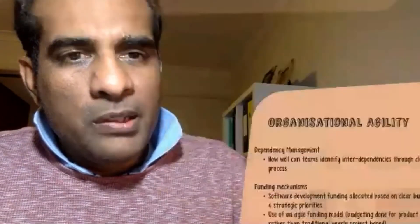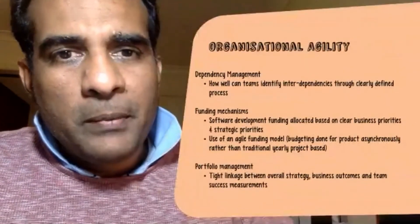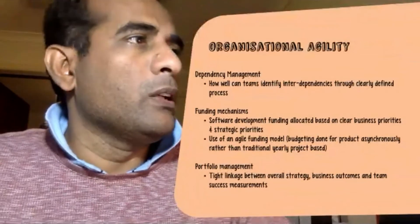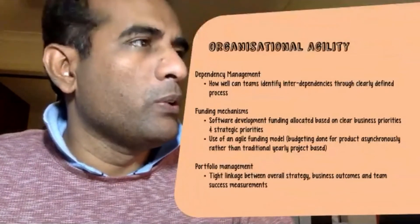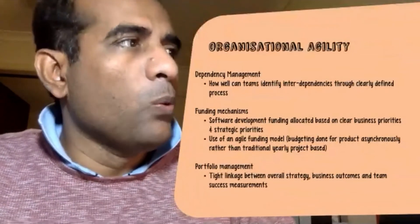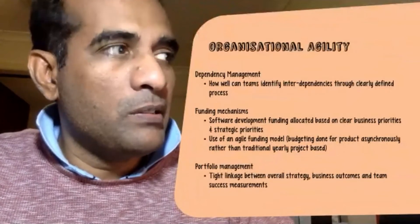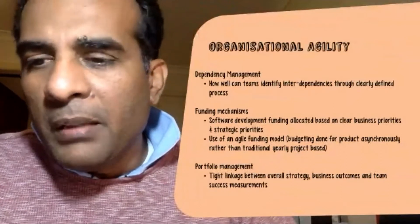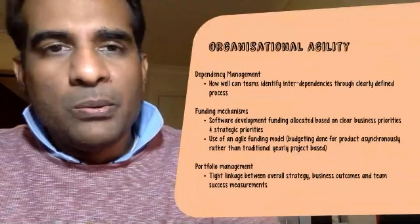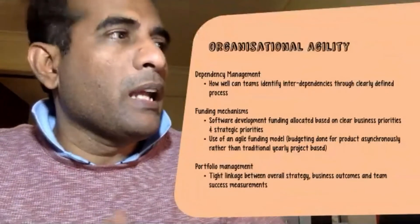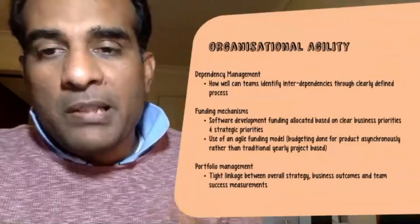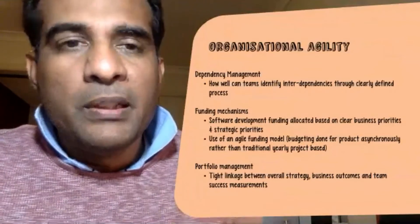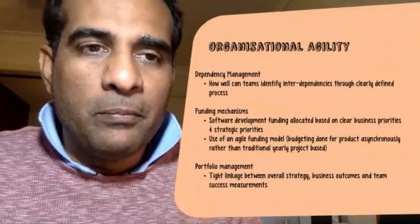The next one is around organizational agility. First thing is dependency management — how well can teams identify interdependencies through a clearly defined process? If I'm an API team and I need to talk to some other team, can I quickly identify what those interdependencies are?